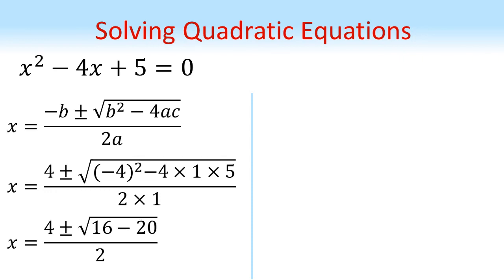Simplifying under the square root gives us 4 plus or minus the square root of 16 minus 20, all over 2. 16 minus 20 is negative 4.